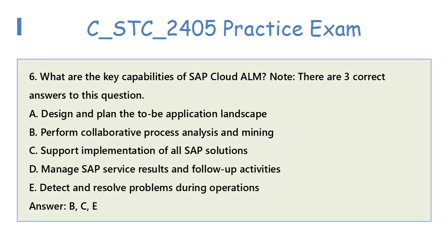Question 6: What are the key capabilities of SAP Cloud Om? Note, there are three correct answers to this question. A. Design and plan the to-be application landscape. B. Perform collaborative process analysis and mining. C. Support implementation of all SAP solutions. D. Manage SAP service results and follow-up activities. E. Detect and resolve problems during operations. Answer: B, C, E.